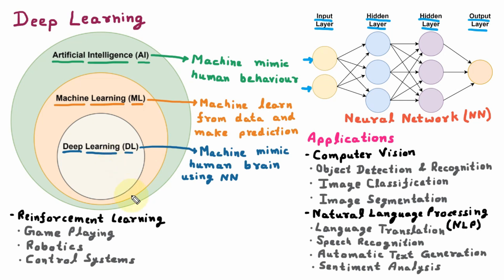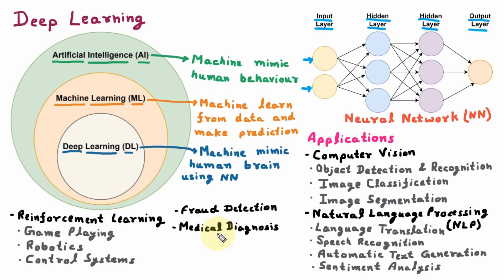The next application of Deep Learning is Fraud Detection. There are so many frauds on ATM, Credit Card, and Debit Card, and these frauds can be detected using Deep Learning. The next application is Medical Diagnosis — diseases like Cancer can be easily diagnosed using Deep Learning. The next application is Self Driving Car. Tesla has launched a car which is driven by itself with no driver, and this is only possible because of Deep Learning.